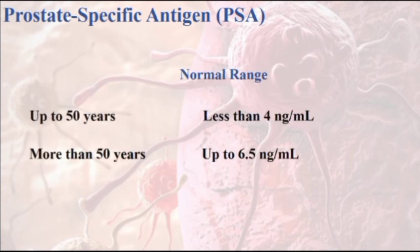Age is an important factor in increasing PSA levels. Men younger than age 50 should have a PSA level below 4 ng per millilitre, whereas a PSA level up to 6.5 ng per millilitre would be considered normal for men in their 70s.